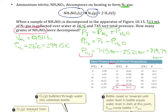We already know the partial pressure, so it looks like we have all the information we need to use the ideal gas law, PV = nRT. We know the pressure, the volume, R is always known, and we know T. That will allow us to figure out how many moles of N₂ we have.